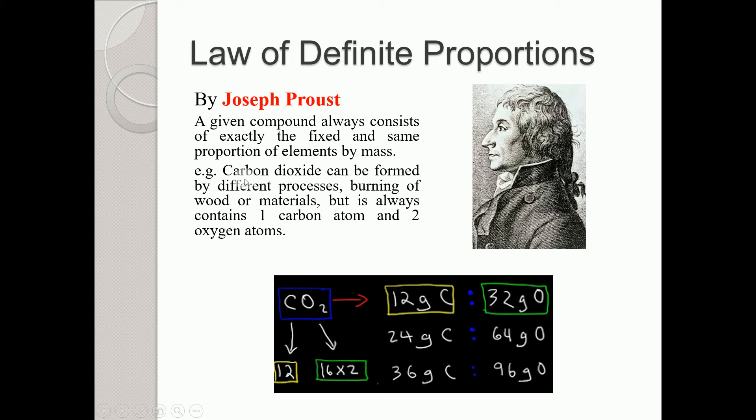For example, carbon dioxide can be formed by different processes - maybe by burning of wood or materials - but it always contains one carbon atom and two oxygen atoms. Whenever we talk about carbon dioxide, the formula is CO2. Why is this fixed? Because of this Law of Definite Proportions.